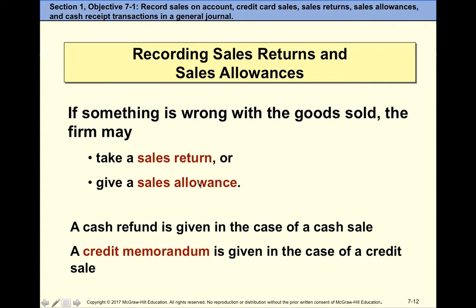From an accounting perspective, returns and allowances are the same types of transactions because we are giving a refund — either a cash refund or a credit memo. It's just like going to a store and making a return: if they don't give you cash, they give you store credit. If the customer made a purchase for cash, we give a cash refund; if it was a credit sale, we give a credit memo, meaning we decrease accounts receivable — the amount they owe us.